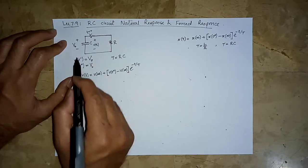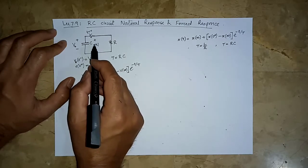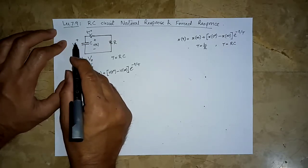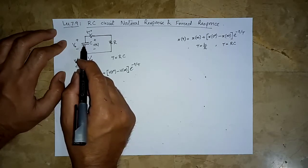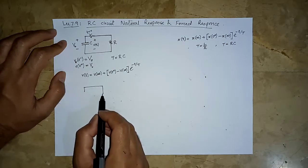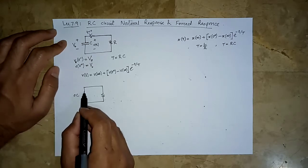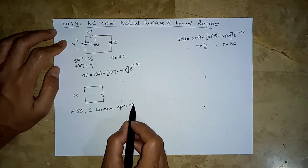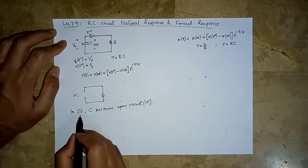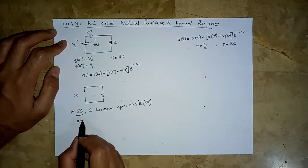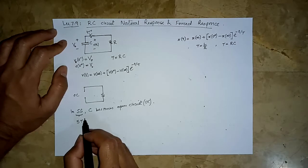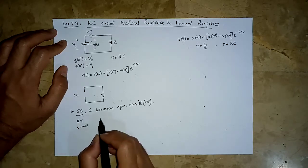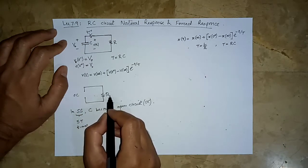Once things have settled down, there is no force in the circuit to change the voltage gradually. Once voltage stays constant, its derivative is zero, so no current flows through the capacitor. No current flowing through the capacitor can be represented as an open circuit. So in steady state, the capacitor becomes an open circuit. This steady state is usually assumed to set in at five time constants, though in theory t must tend to infinity.